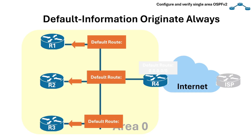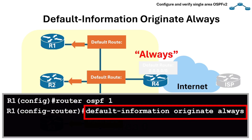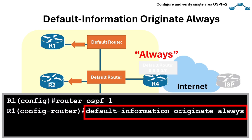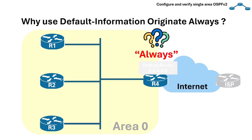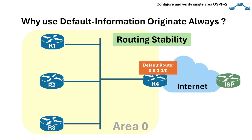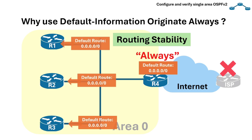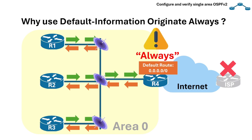We can also force the router to advertise a default route into OSPF even if it doesn't currently have one in its routing table. We use the always keyword to advertise unconditionally, added to the default-information originate command. One reason to use it is routing stability — without always, if the ISP link keeps flapping, the default route will appear and disappear constantly. With always, the router keeps advertising the default no matter what, preventing instability inside the OSPF domain. Just be careful, as unconditional defaults can cause routing loops or black holes if not planned properly.